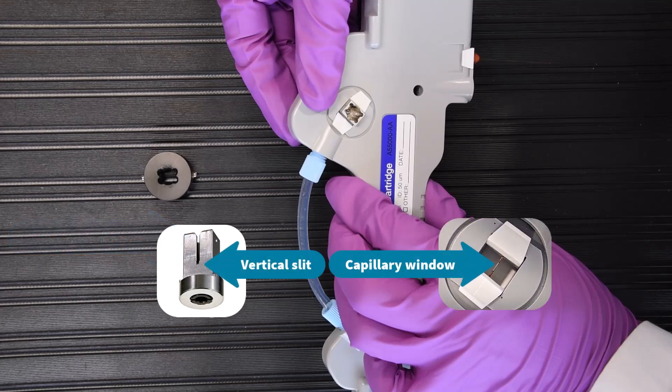Ensure that the vertical slit in the aperture lines up with the length of the capillary window, which should be visible through the cartridge window.